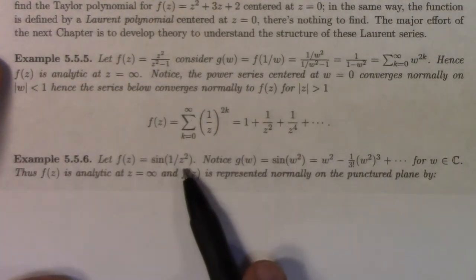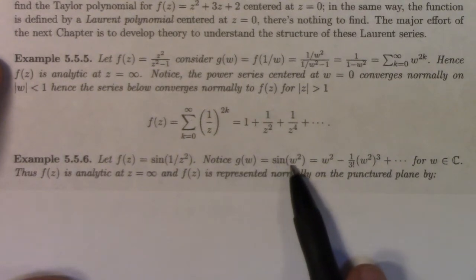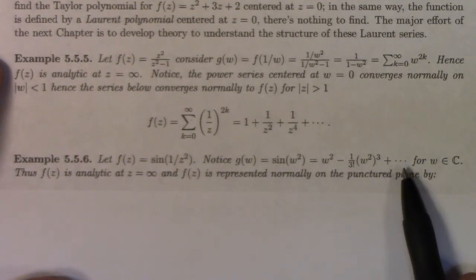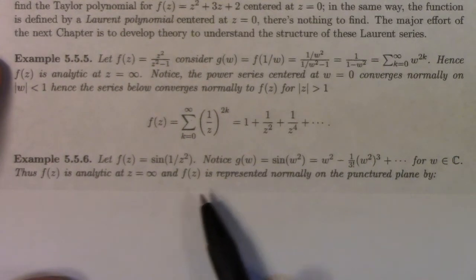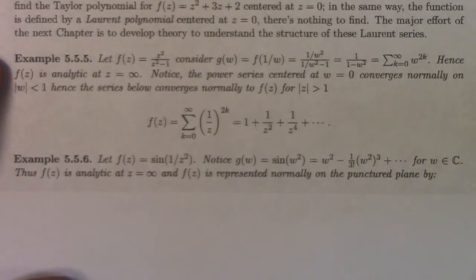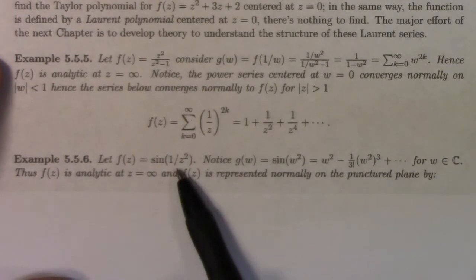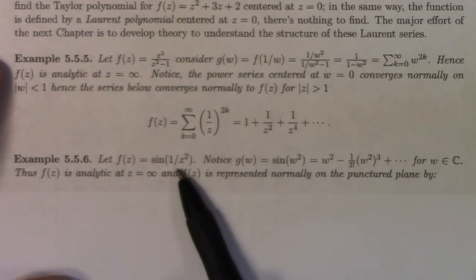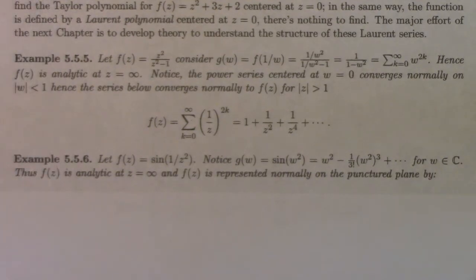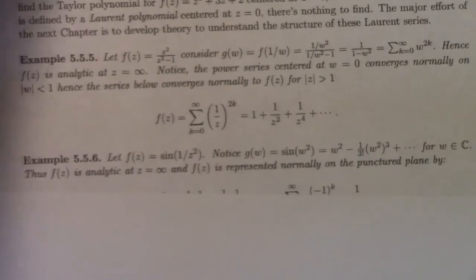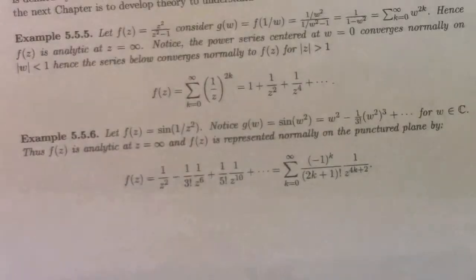Here's another one: sine of 1 over z squared. So g of w is sine of w squared, which is analytic at w equal to 0. So this is also analytic at infinity. Generally speaking, if you've got a function which is built from a reciprocal of z composed with another function which we know is holomorphic, it's going to be analytic at infinity.